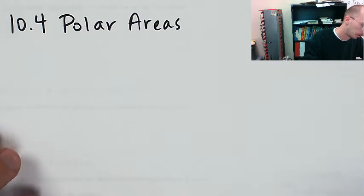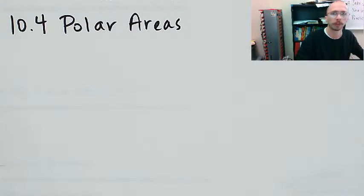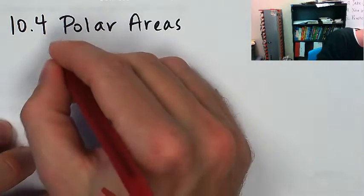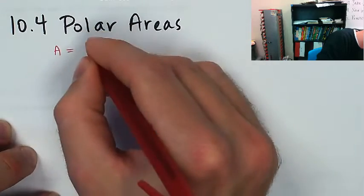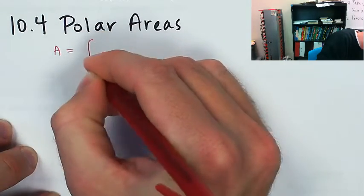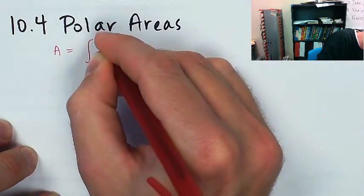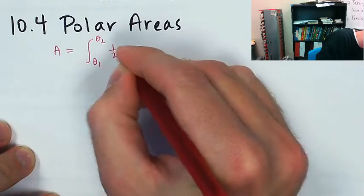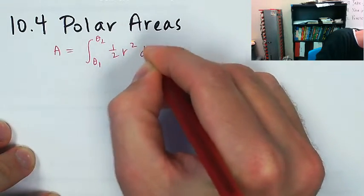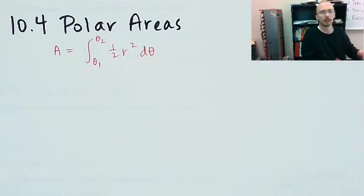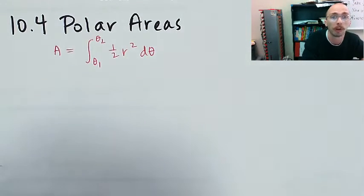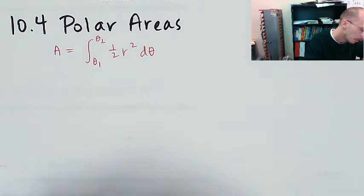Now let's talk about the polar areas. For polar areas, the number one most important formula to know is that area is equal to the integral between two theta values of one-half r squared d theta. You have to know that. That's the key to even starting any of these polar area questions.